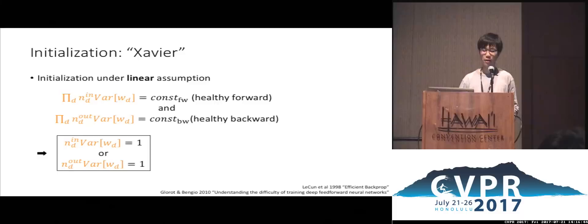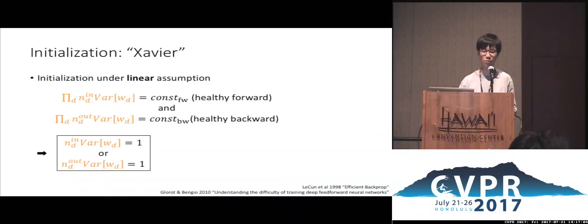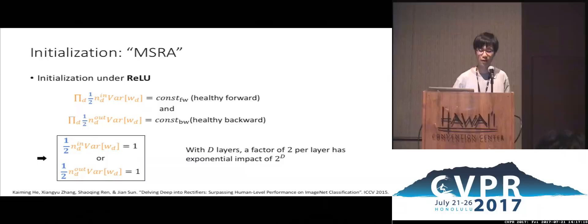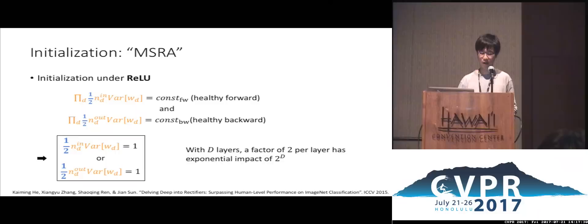One of the most popular initializations is the Xavier initialization, developed under linear assumptions. It requires constant factors in both the forward and backward paths — ideally a factor of one per layer. Xavier initialization is very useful, but was developed under linear assumptions. If the activation is ReLU, we can derive a modification of Xavier by a factor of 1/2. This factor matters because with D layers, a factor of 2 per layer has an exponential effect of 2 to the power of D.